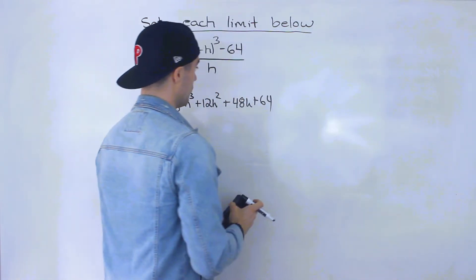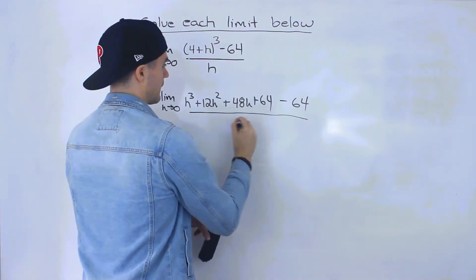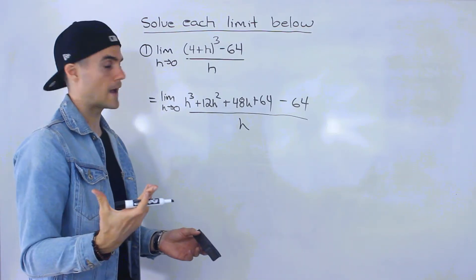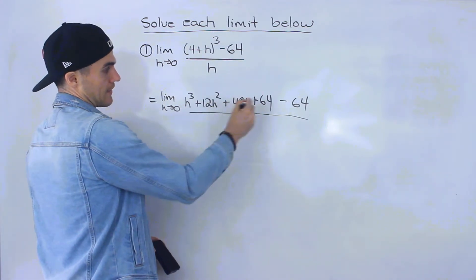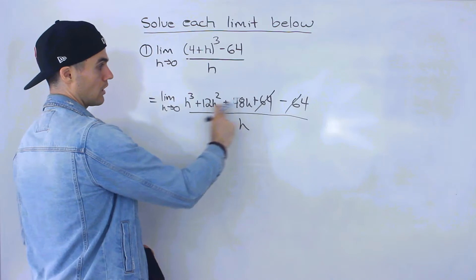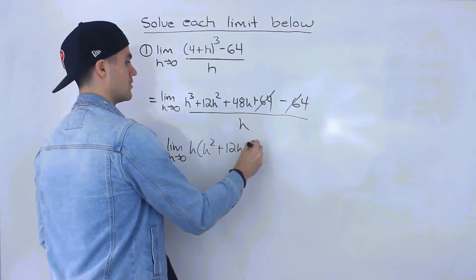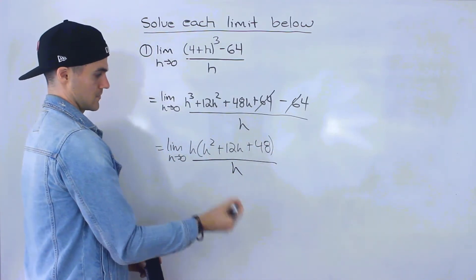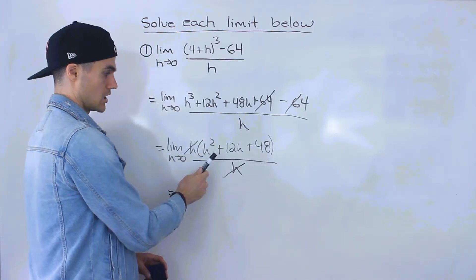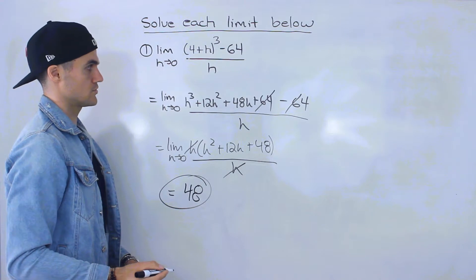So when you foil all of this out and simplify the like terms, you get that expression. Then we have that minus 64, so all of that is over h. The 64 minus 64 cancels out, and now all terms in the numerator are in terms of h. We can factor out h, giving us h times (h squared plus 12h plus 48), all over h. Those h's cancel out, and now we can sub in zero for h. This goes to zero, this goes to zero, and we're just left with 48.